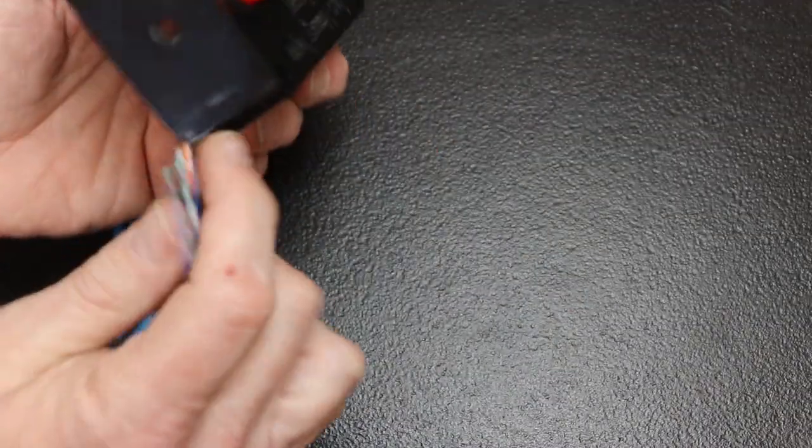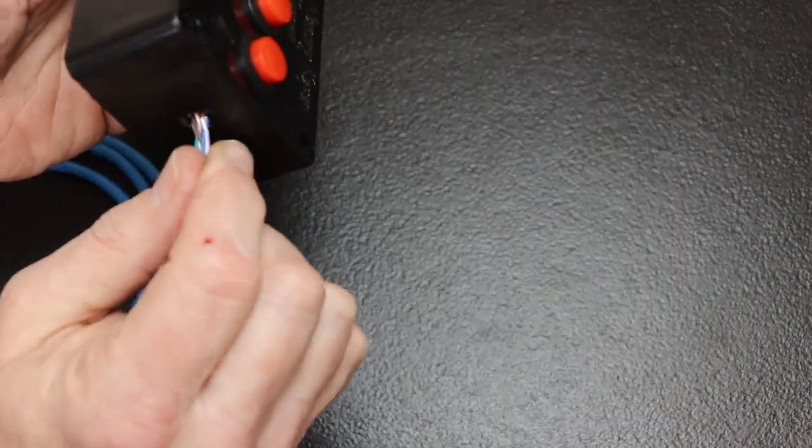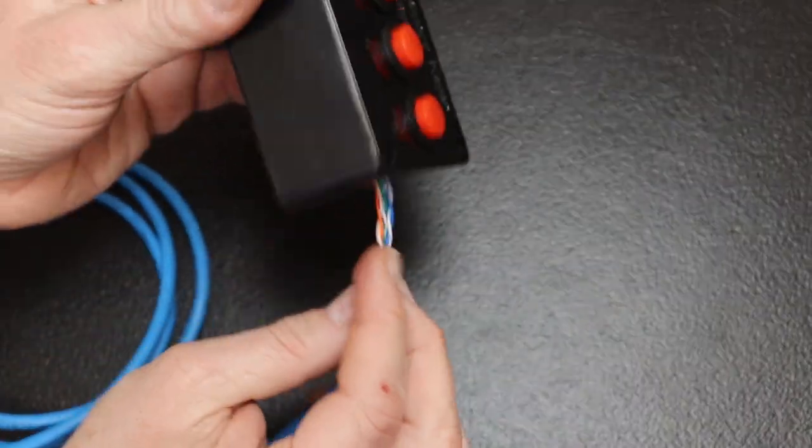Once the switches are in, we'll pull the cable through the box so that we can solder the wires to the microphone jack that will be mounted on one side.